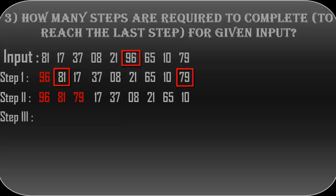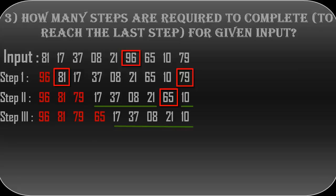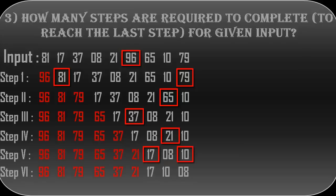In step 3, follow the same process: the first three elements remain the same as in step 2. Find the highest number from the remaining numbers in step 2, which is 65, and put it in the fourth spot in step 3. The rest of the numbers stay in the same order as step 2. Following the same process, you will get step 4, step 5, and finally step 6.